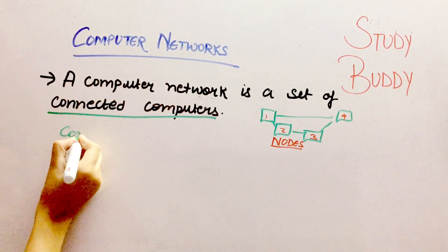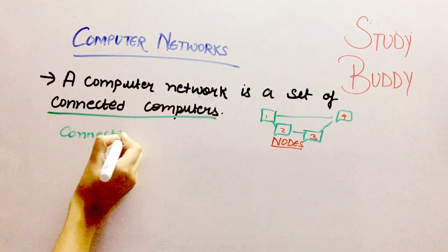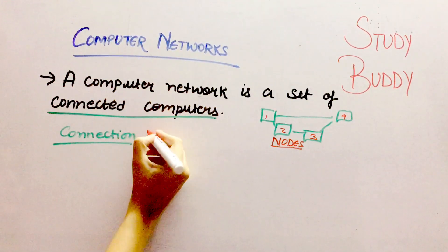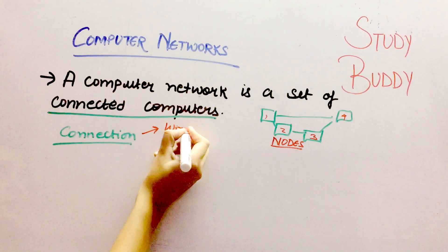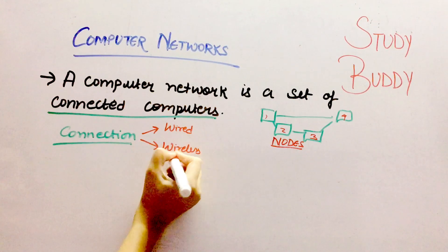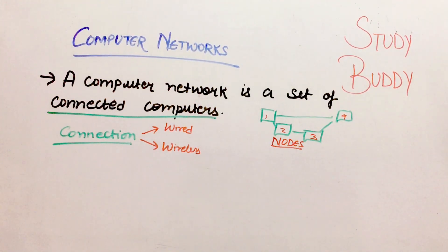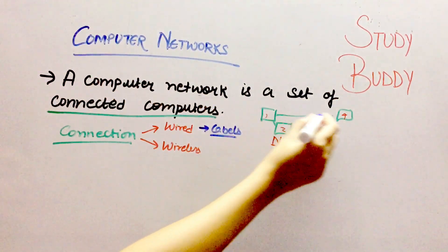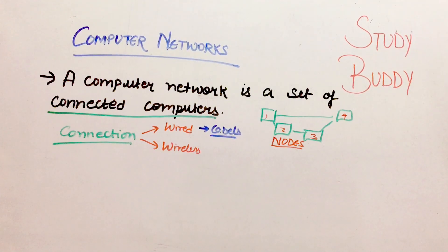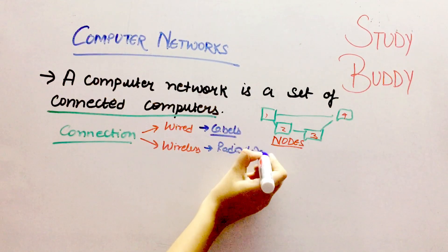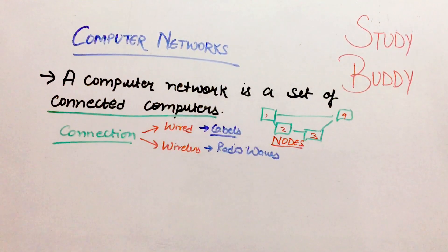The connection between computers can be of two types. The first is through wired medium and the second one is through wireless medium. In wired mediums, there are various cables that are connected through your computers. And in wireless, your computers are connected through radio waves or various other waves.